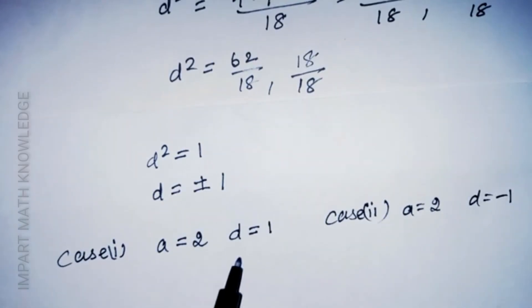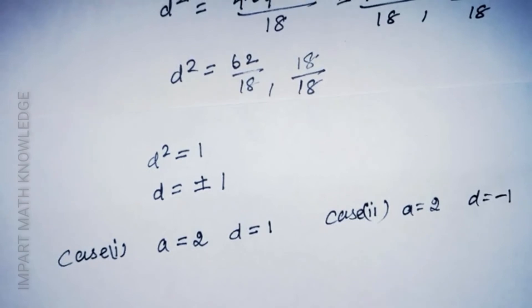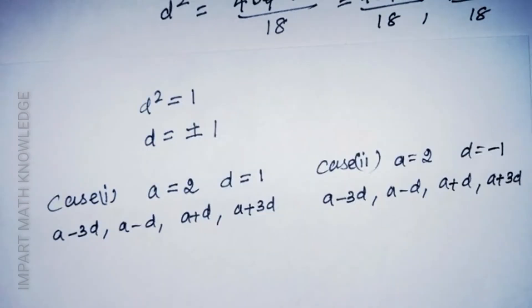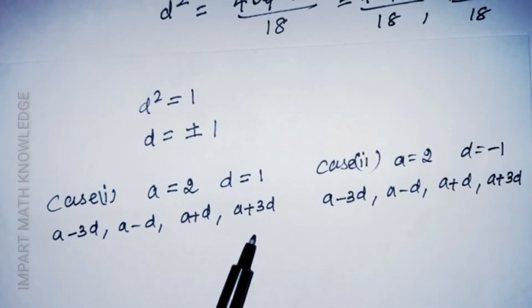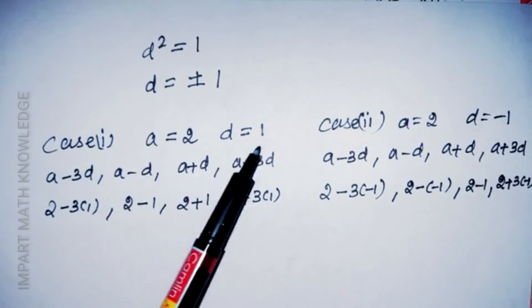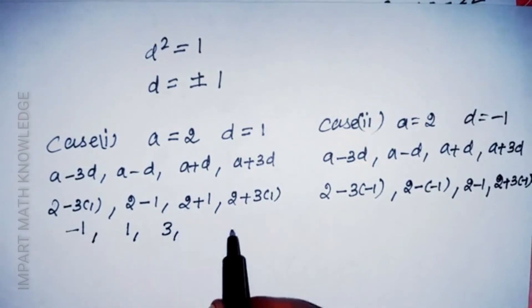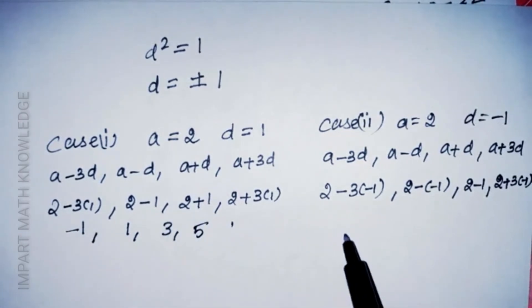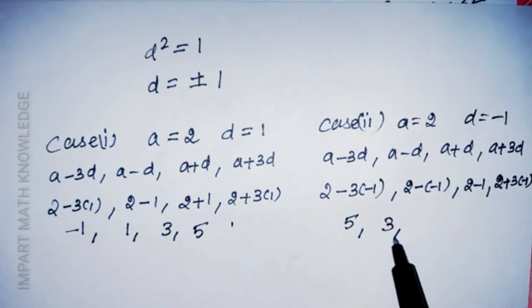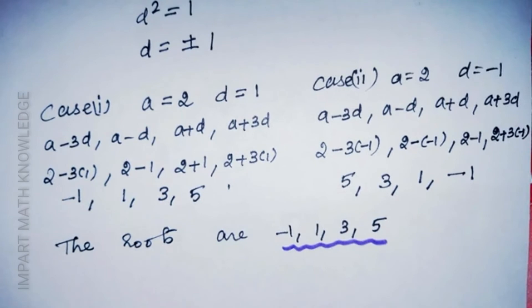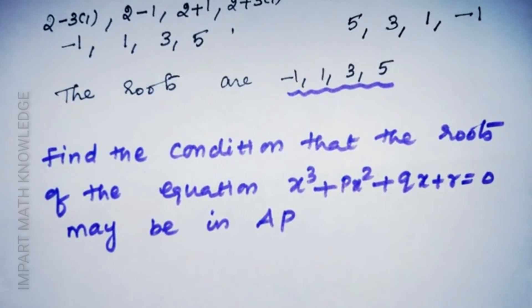Case 1: a = 2, d = 1 → roots are a-3d, a-d, a+d, a+3d = -1, 1, 3, 5. Case 2: a = 2, d = -1 → roots are 5, 3, 1, -1. Both cases give the same set of roots. So the roots of the given fourth-degree equation are -1, 1, 3, and 5.